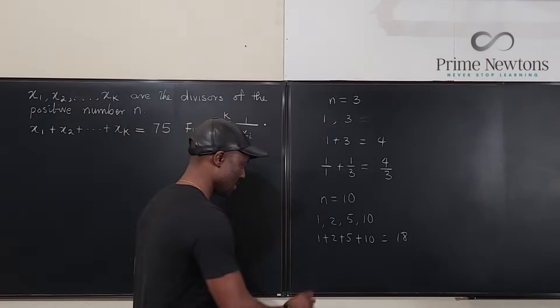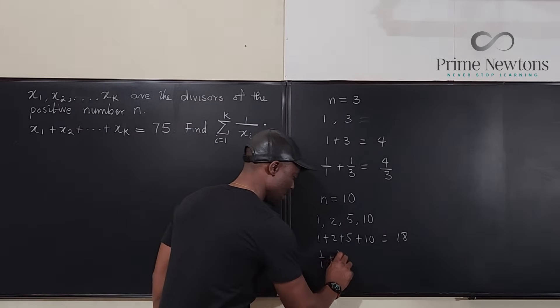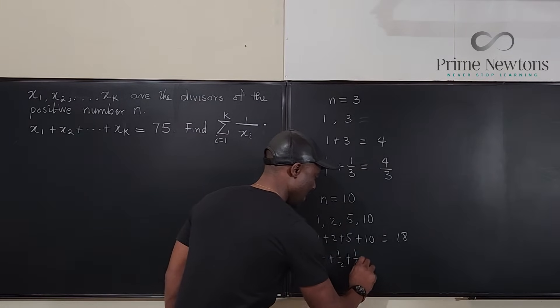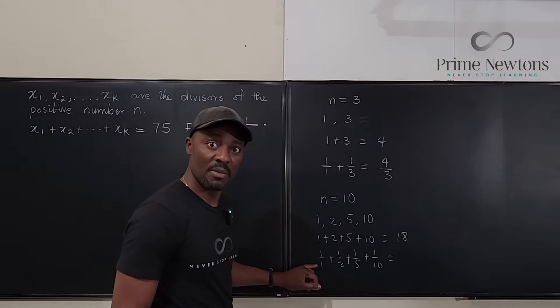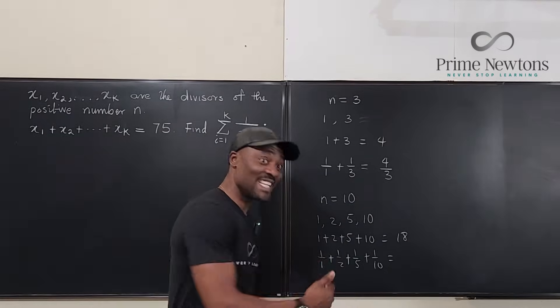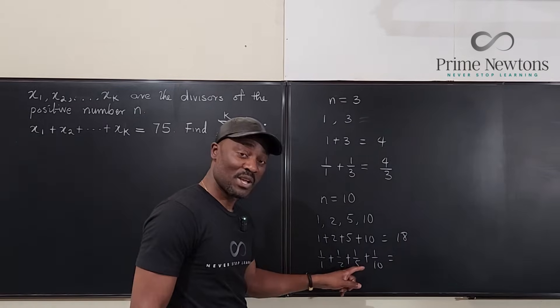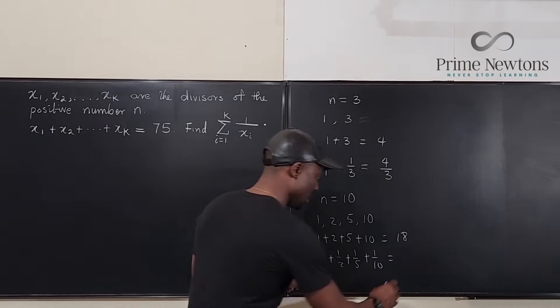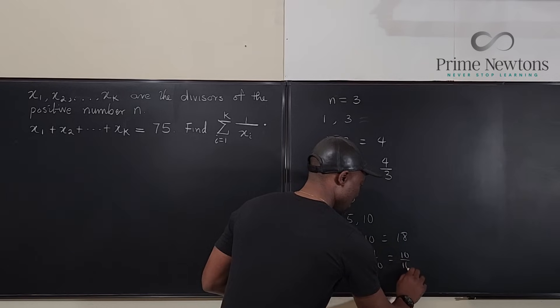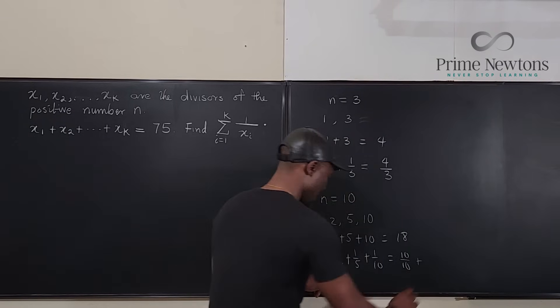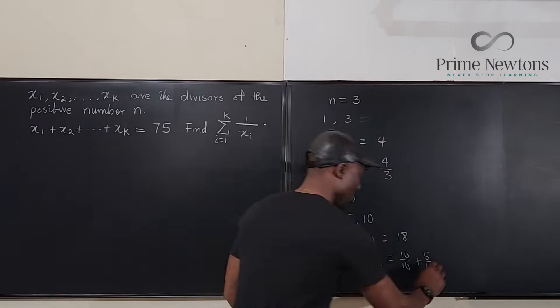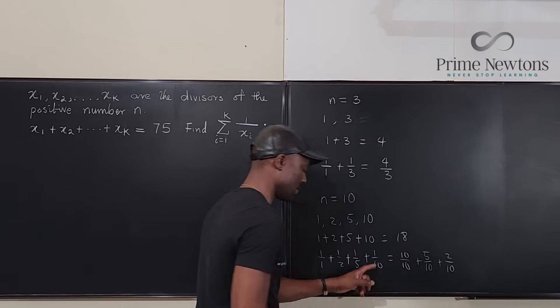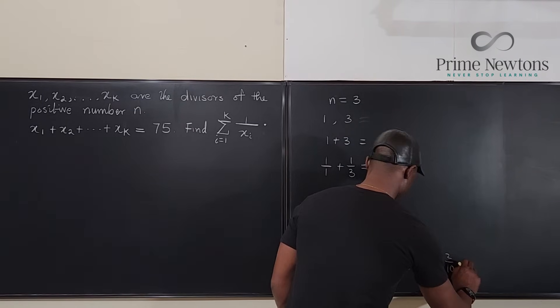What about the reciprocals? It will be 1 over 1 plus 1 over 2 plus 1 over 5 plus 1 over 10. Well, if you try to give them a common denominator, now this is the key to answering this question. If you want to give all of them a common denominator, this has to be 10 over 10, and this has got to be 5 over 10. This is going to be 2 over 10, and this has got to be plus 1 over 10.